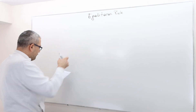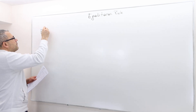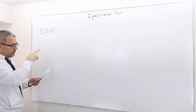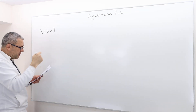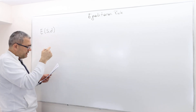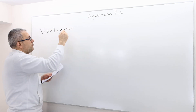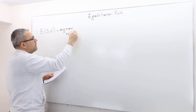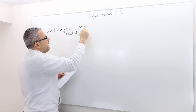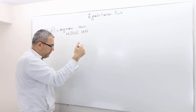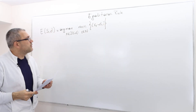I'm going to focus on the egalitarian rule today. The egalitarian rule — the notation we use is e(S,d), where S is the bargaining set and d is the disagreement point — is described as arg max over x from the individually rational payoff set of min over i in N of (x_i minus d_i).